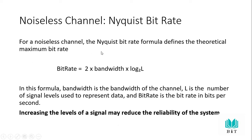For a noiseless channel, the bit rate formula is: bit rate = 2 × bandwidth × log₂(L), where L is the number of signal levels. If we increase the number of signal levels, it reduces the reliability of the system and effectively reduces the bit rate.